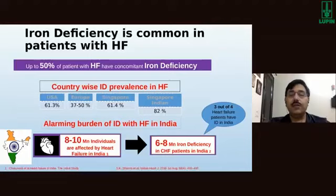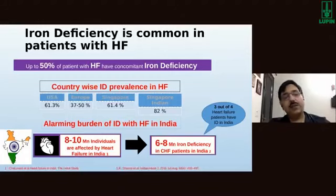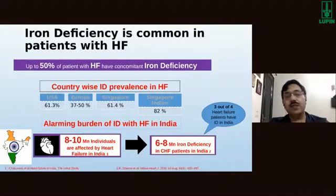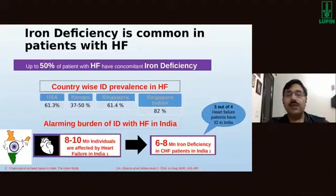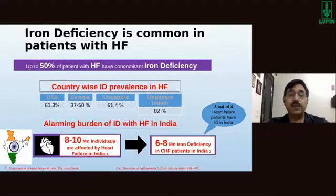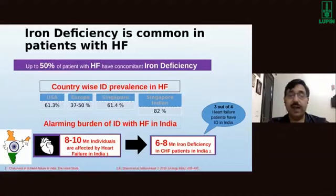Country-wise prevalence of iron deficiency in heart failure: in the USA it is about 61.3%, in Europe between 37 to 50%, and in Singapore Indians approximately 82%. In India, an estimated 8 to 10 million individuals have heart failure, and about 3 out of 4 have iron deficiency — meaning approximately 6 to 8 million patients have concurrent heart failure and iron deficiency. Simply improving their iron status can improve outcomes.